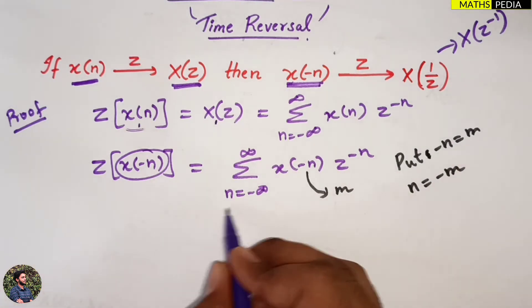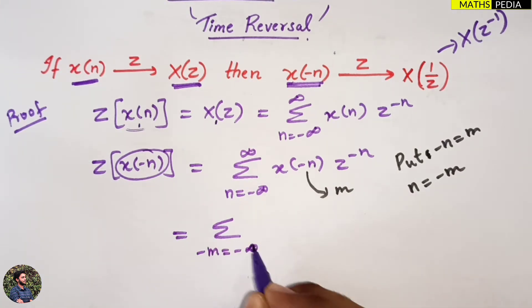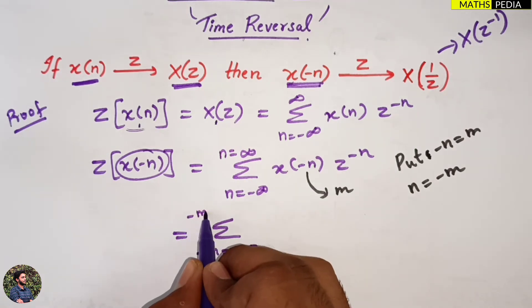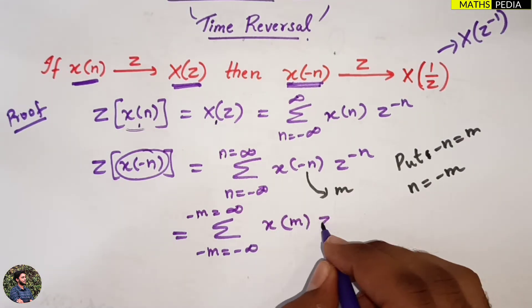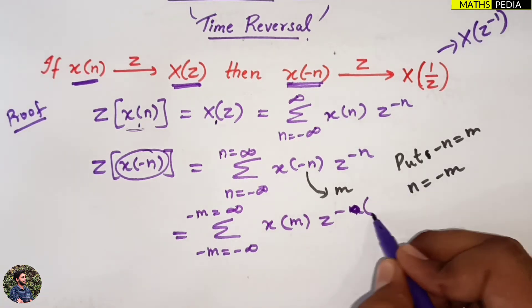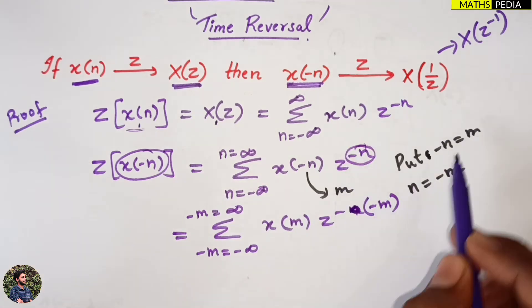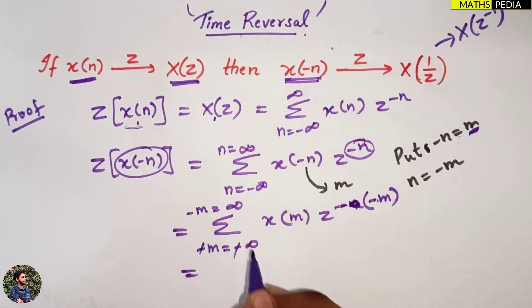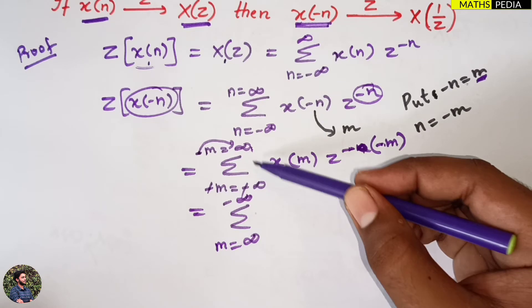Now the summation limits will change. When n = -∞, -m = -∞, and when n = ∞, -m = ∞. So x(-n) becomes x(m), and z⁻ⁿ becomes z⁻^(−m) = z^m. The minus sign flips the summation, so it runs from ∞ to -∞. The minus-minus cancels, and taking the minus to the other side, the summation changes to run from ∞ to -∞.